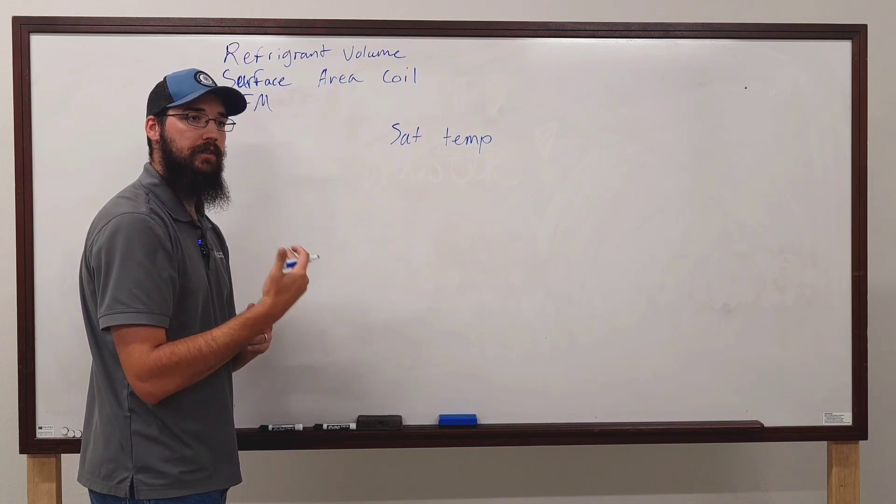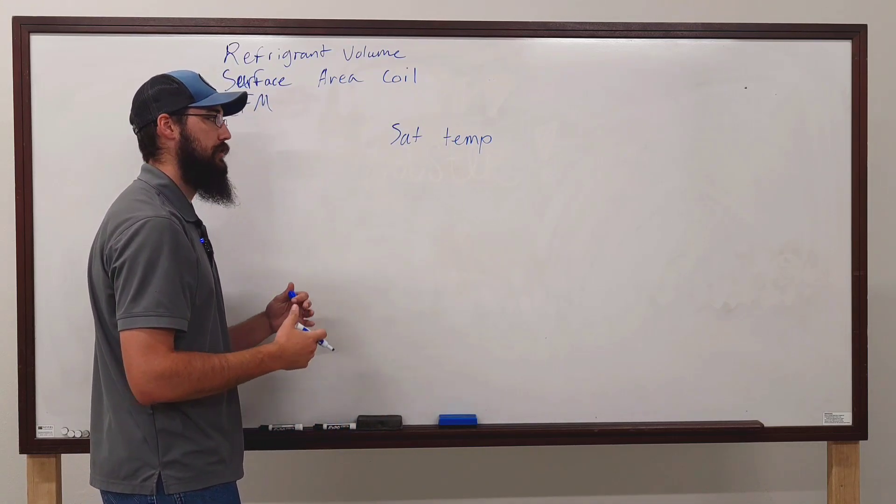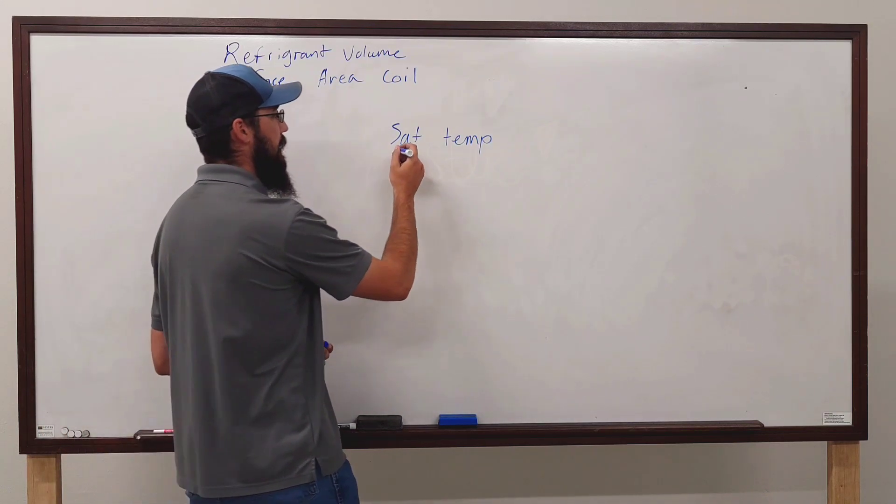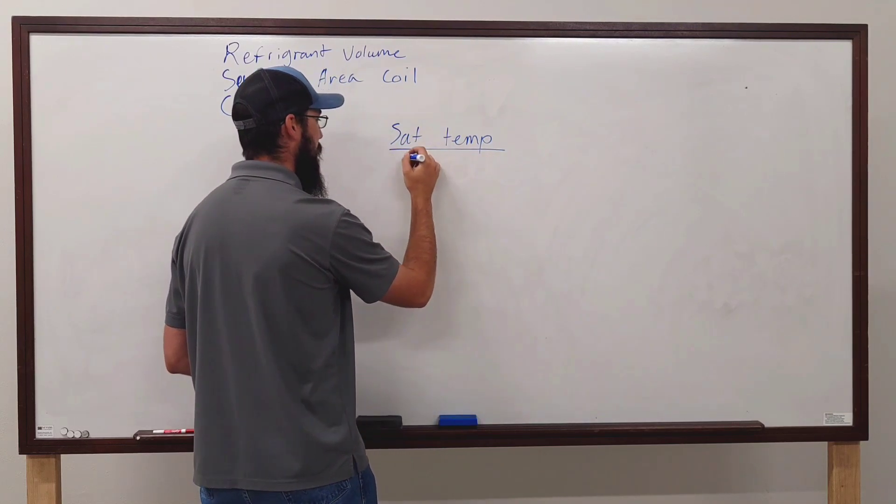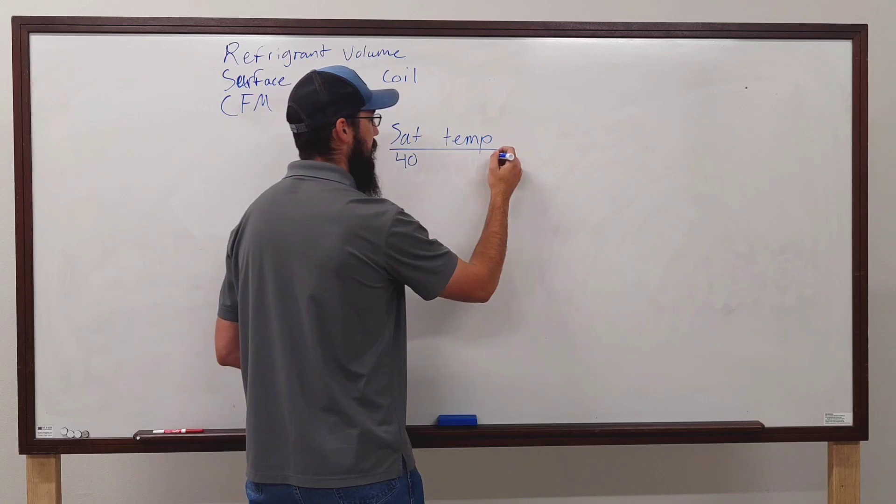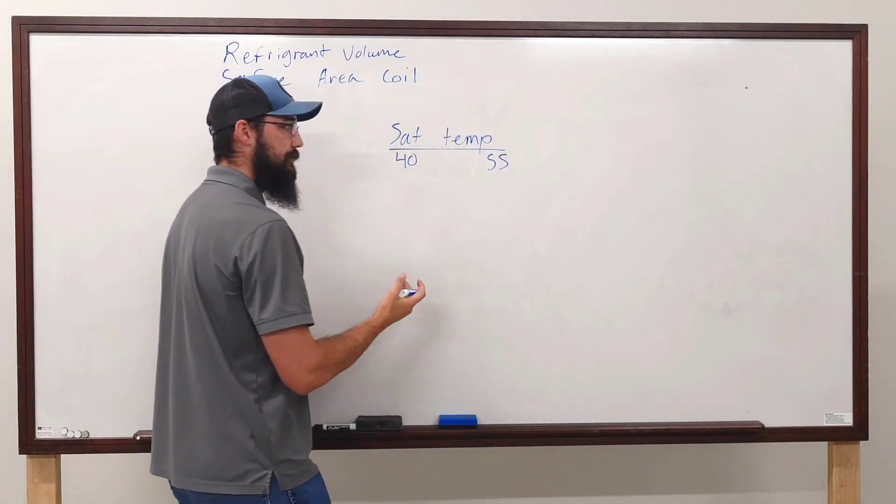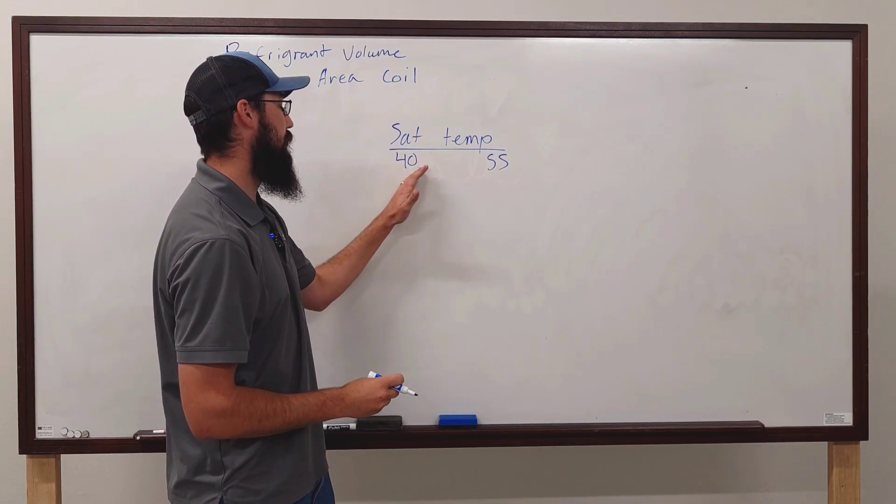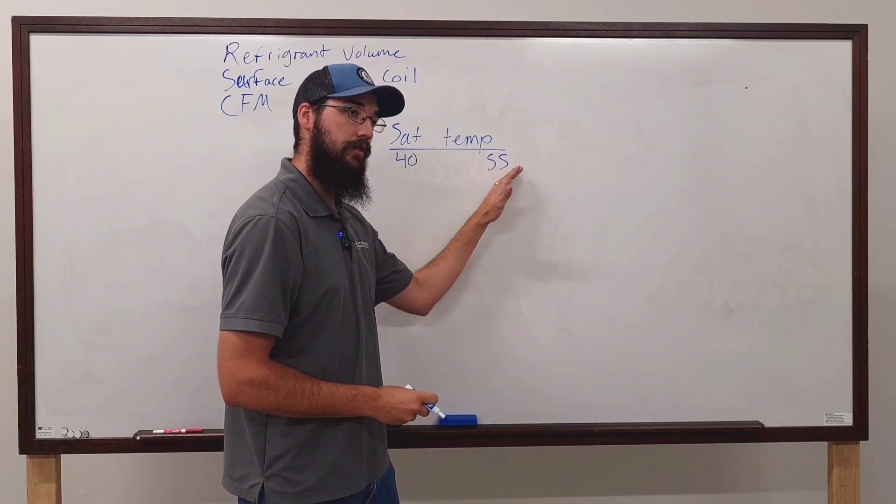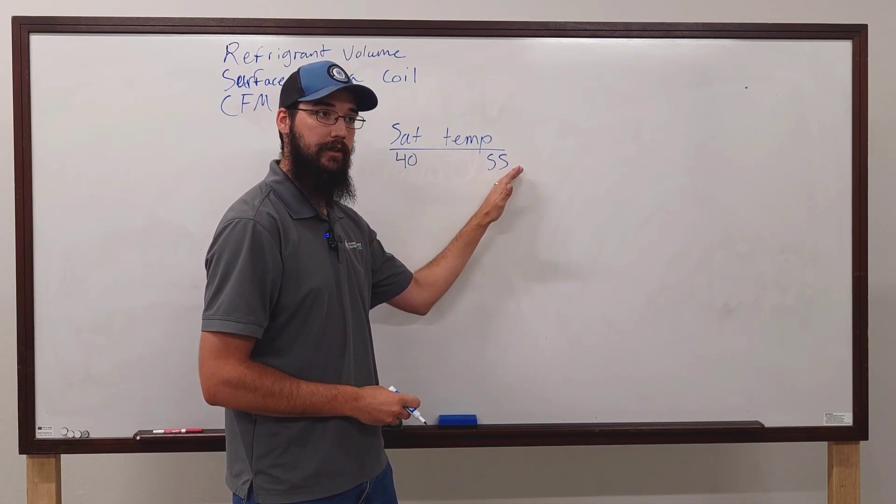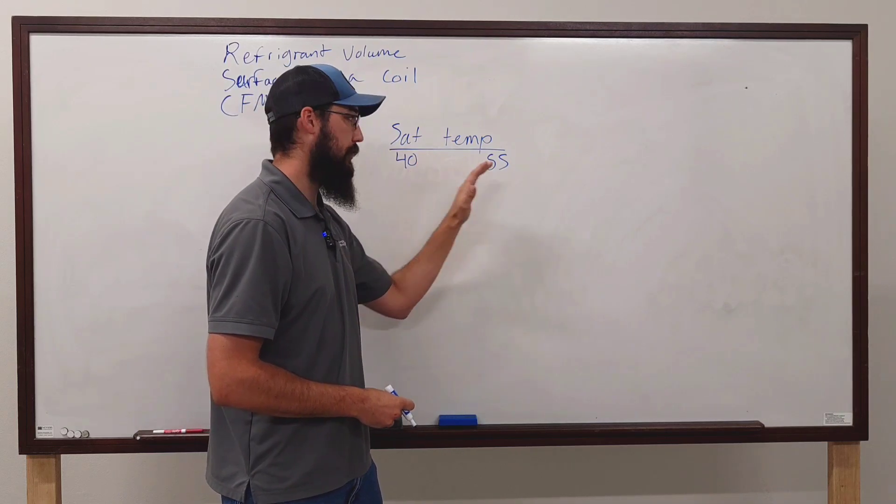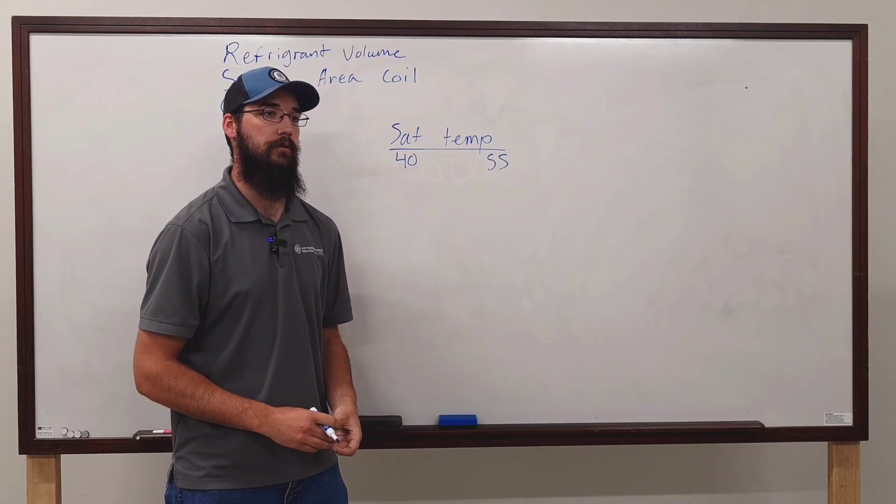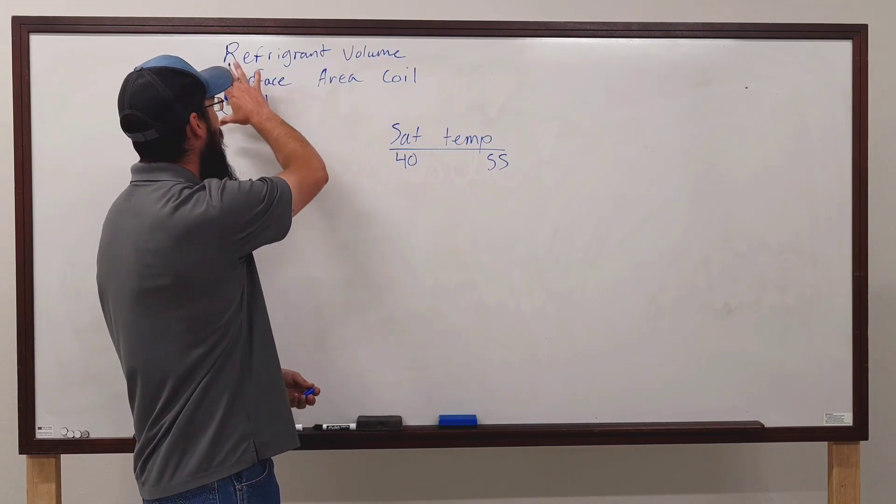Why does that saturation temp matter and how is it affected depending on the coil itself? And this is where we start talking about system efficiencies, whether it's a high efficiency, low efficiency, 13 SEER, 25 SEER, whatever. All of that plays into this number. Whether we're trying to run 40 or 55, which one is it? Which one is correct? Because if you walk up to a system that's trying to operate at 55 degrees of evaporator saturation and you want it to run at 40, and you're thinking something's wrong when there's nothing wrong, it's doing exactly what it's designed to do.